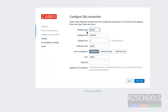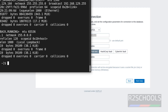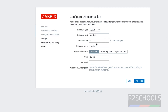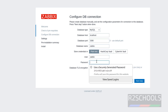Here, select the database type as MySQL and provide the database hostname as localhost or IP — both are fine. The database port for MySQL is 3306. The database name is zabbix, which we created. The username is also zabbix, which we created. Then provide the password for the zabbix user, which is 'password'. Click Next.